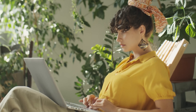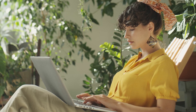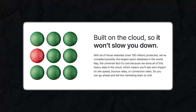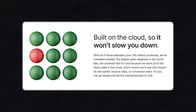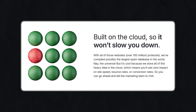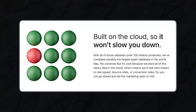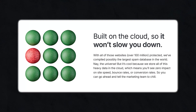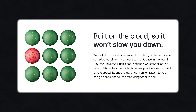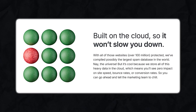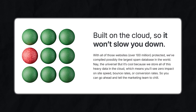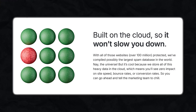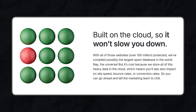It's also worth noting that Akismet is designed to be scalable. Whether you run a small personal blog or a large commercial website with thousands of comments, Akismet can handle any of these. The system is built on a cloud infrastructure that adapts to the volume of data it needs to process, ensuring consistent performance even during traffic spikes. For sites experiencing rapid growth, this scalability means you don't have to worry about spam management slowing you down or requiring additional resources as your audience expands.